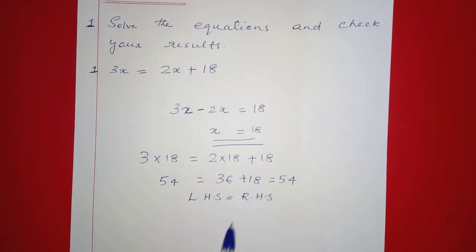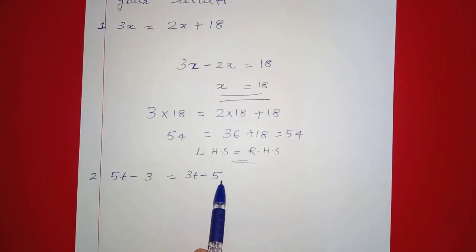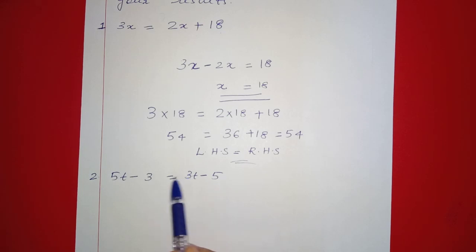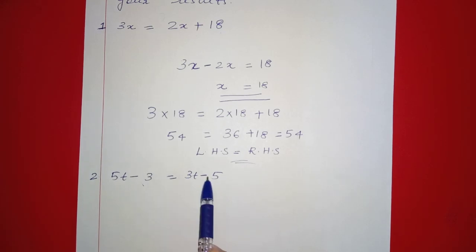Next question: 5t minus 3 is equal to 3t minus 5. The variable here is t. That is left-hand side and right-hand side.